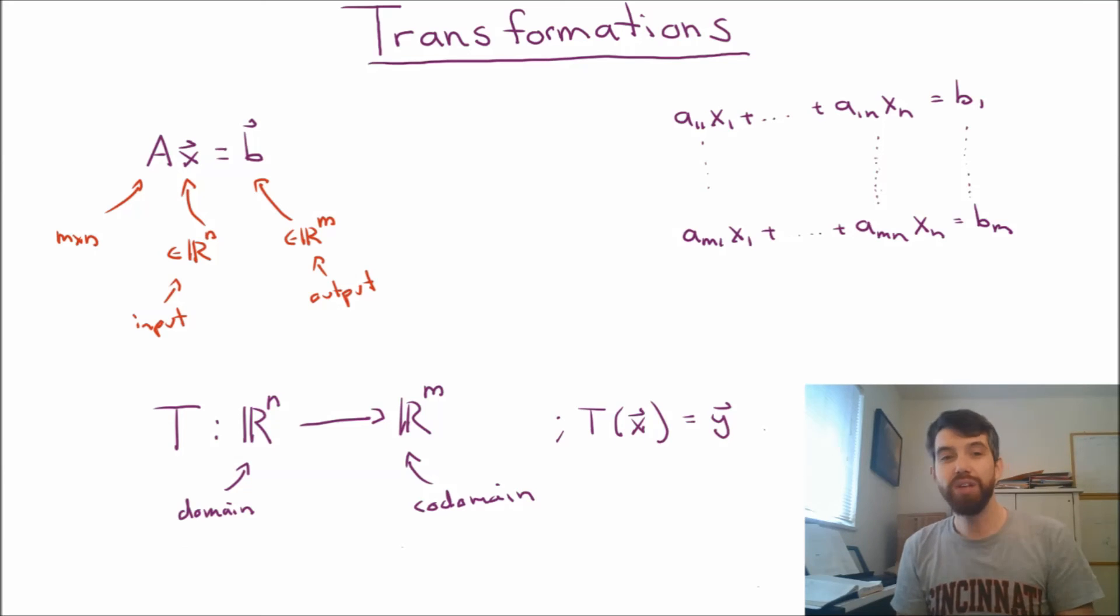In other words, it's not the case that you put something in, and then you get multiple different types of things out. You put one thing in, and you get one thing out. In this case, you put one vector in, and you get one vector out. So, these transformations, to be transformations, have to have the property that there is a unique, in other words, only one, there is a unique output for every input.